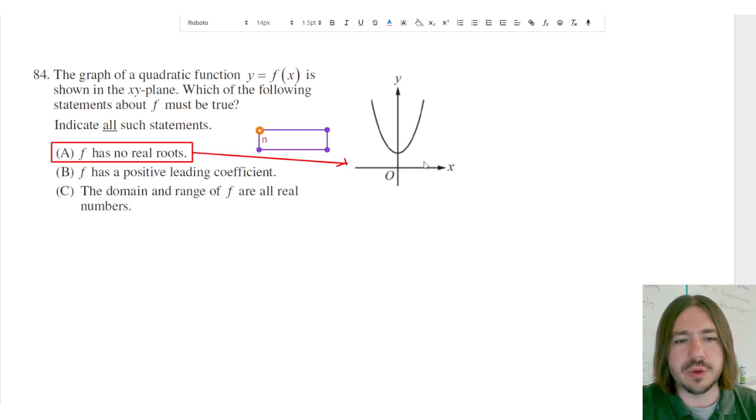There will be roots, they just won't be real. They'll be complex, and they'll have that little imaginary number i involved in there, the square root of negative 1. But this one has no real roots.